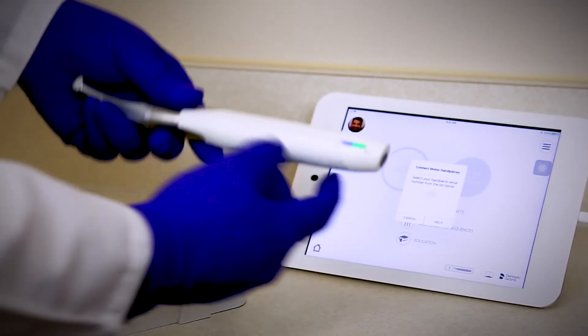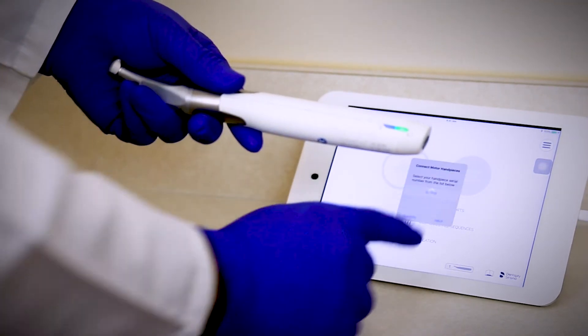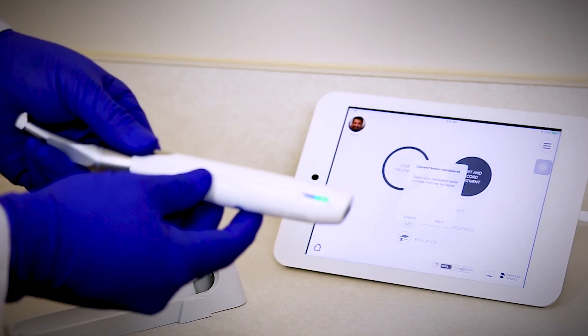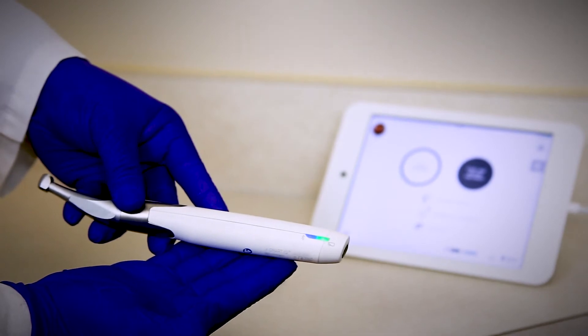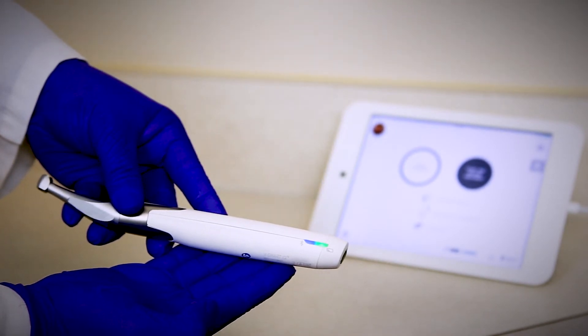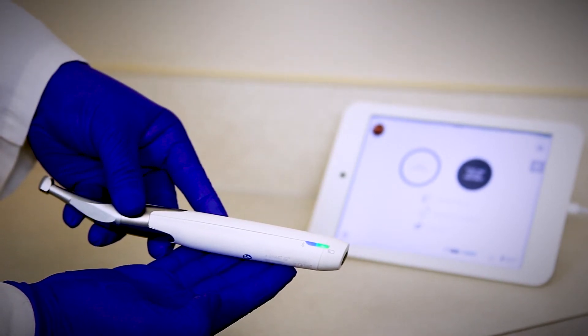Check the motor handpiece serial number and click on the corresponding number on the iPad mini screen. When the motor handpiece is connected, the icon changes and the Bluetooth light turns solid blue.